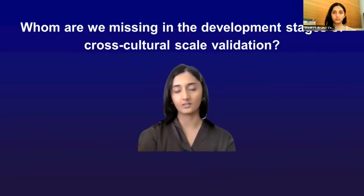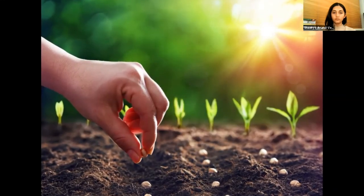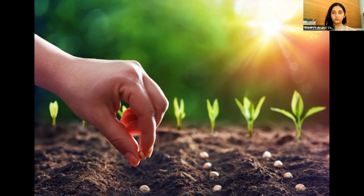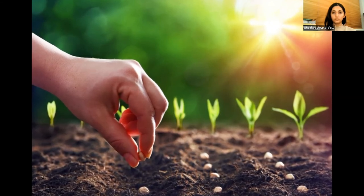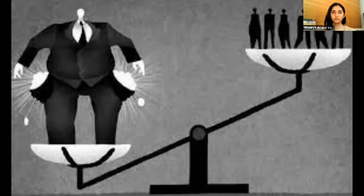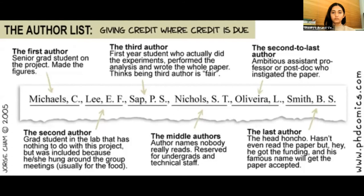Sometimes research doesn't start out as cross-cultural — this was the case with my study. Once the seed of having more diverse samples was planted, I let it lay dormant while preparing my study for an Irish population. In doing so, I missed out on having the input of collaborators in India from the get-go. Involving researchers from local target populations from the idea stage fosters a fairer relationship between PIs and collaborators, reducing the underlying power imbalance between PIs from largely Western, resource-rich institutions and researchers from non-WEIRD or not-so-well-funded ones. Decisions about level of involvement, potential compensation, and authorship can be made more respectfully in this way.